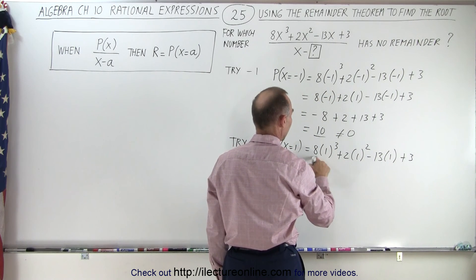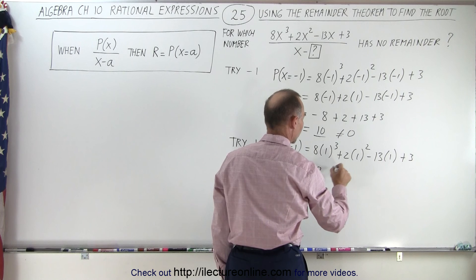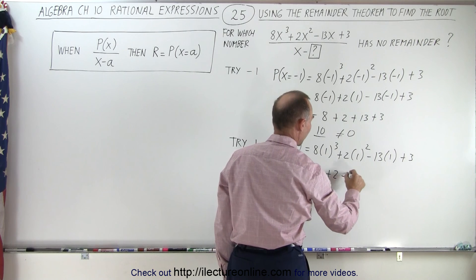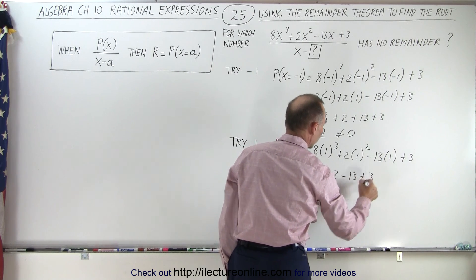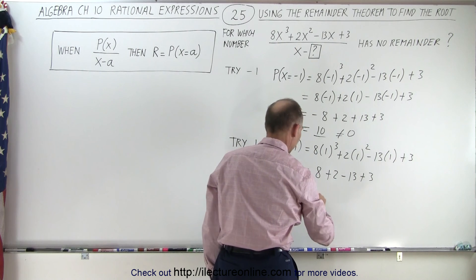So this is equal to 8 times 1 which is 8. This is plus 2 minus 13 plus 3. When we add all that together, we get 0.